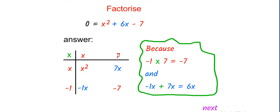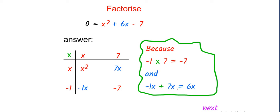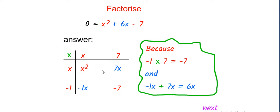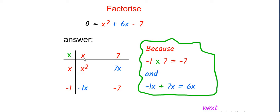Look at the red one, and then look at the blue one. Minus x plus 7x equals 6x, which matches the 6x in our equation. So this is the correct factorization. The result is (x + 7)(x − 1).